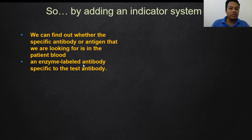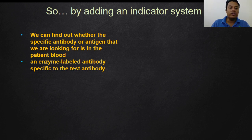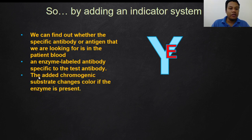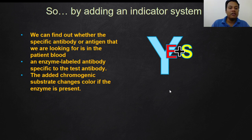When an enzyme-labeled antibody specific to the test antibody — the reagent antibody — interacts with the patient's test antibody, we can detect what we are looking for. For example, if a patient is suspected of having COVID-19, we look for COVID-19 antibody in the patient using an enzyme-labeled antibody against the COVID-19 antibody. The added chromogenic substrate changes color if the enzyme is present, meaning the enzyme-labeled antibody must be present when the substrate is added.